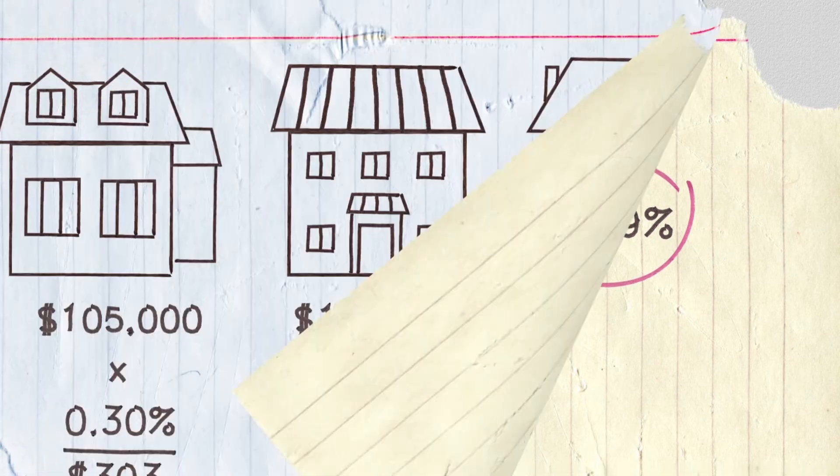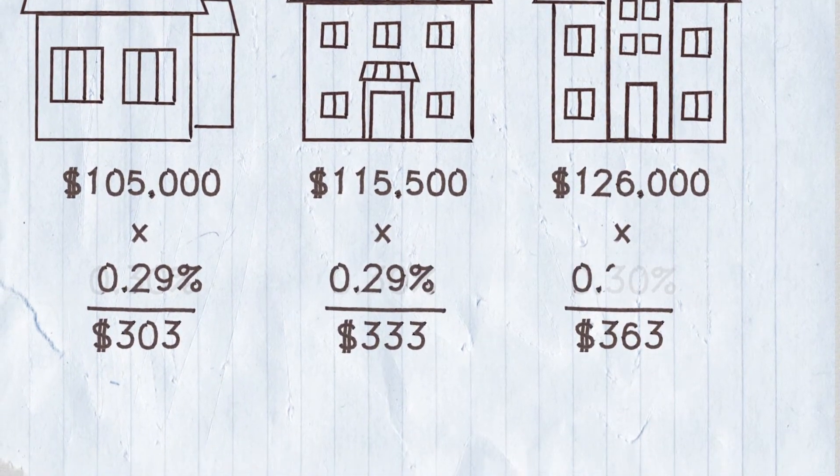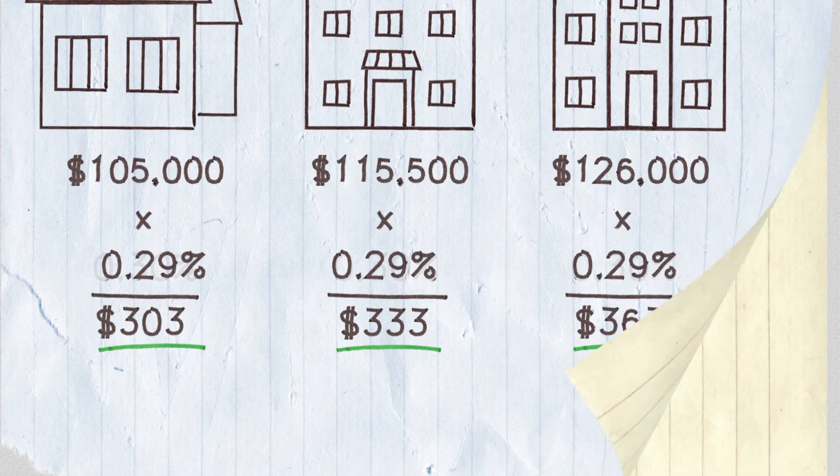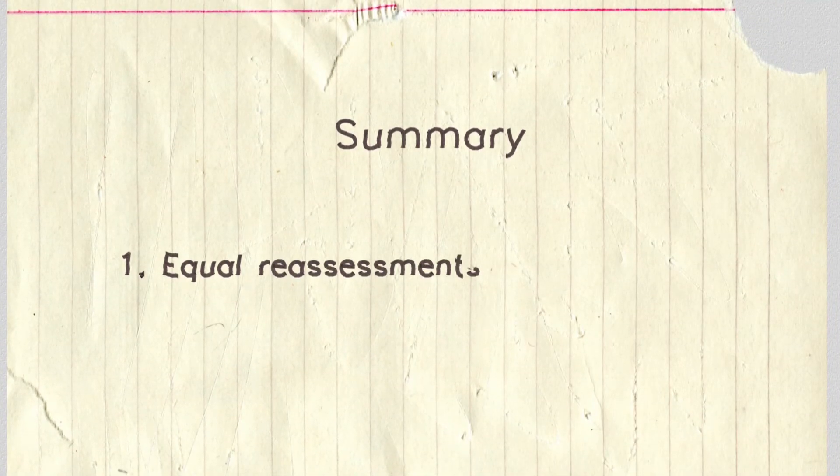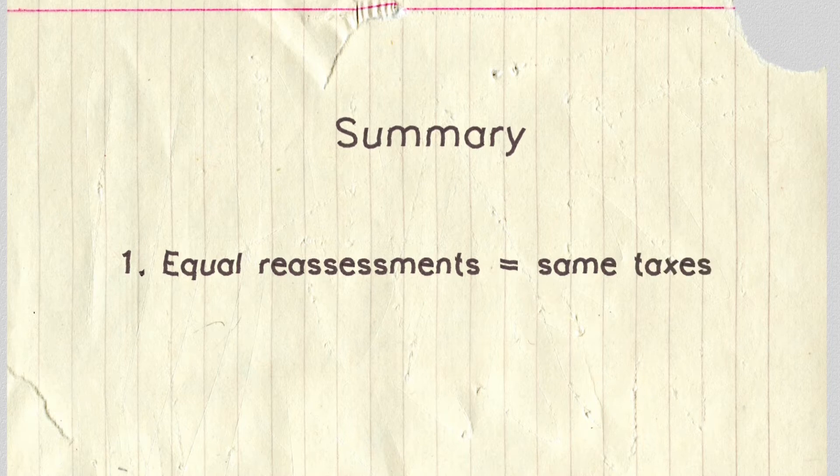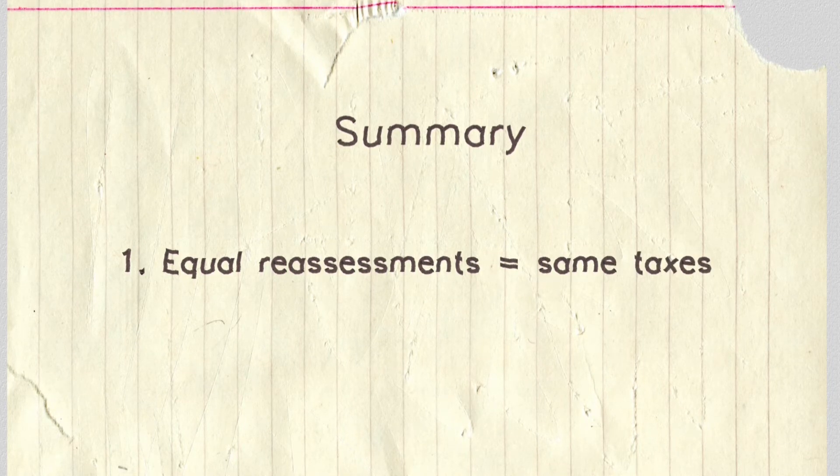Now, when we apply that new rate on all the homes, everyone still pays the same. Let's recap. Property taxes are based on what a home is worth. If reassessments all increase equally, then everyone pays the same taxes as before.